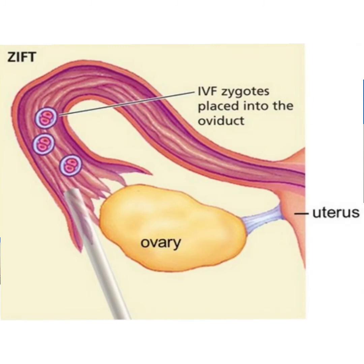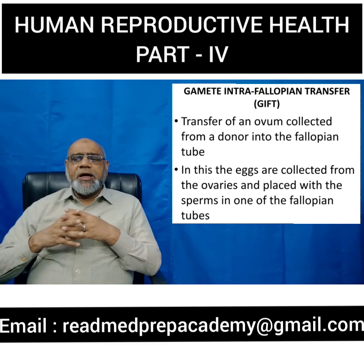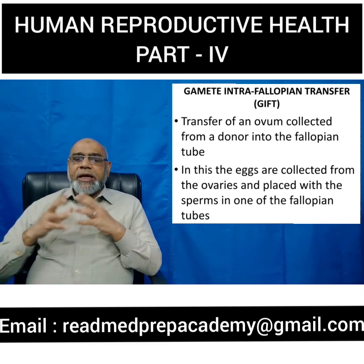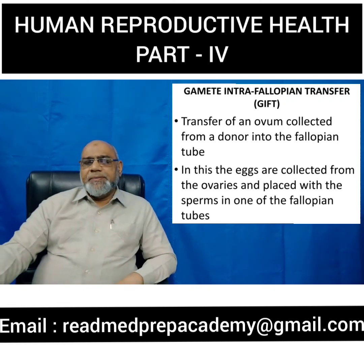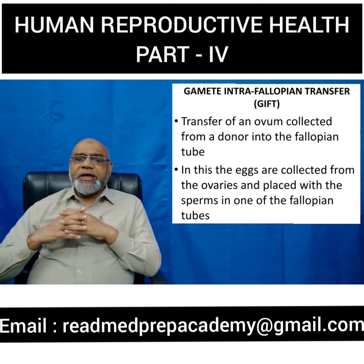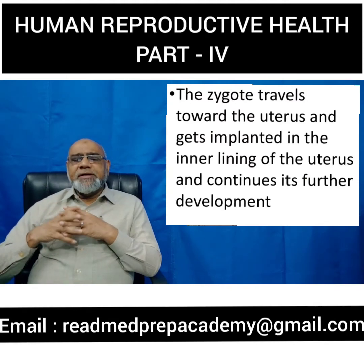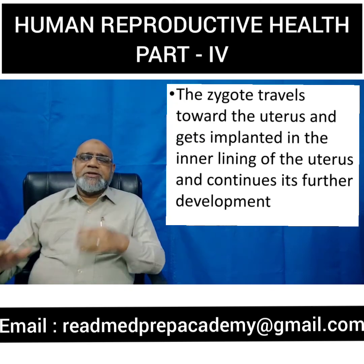What is gamete intrafallopian transfer, or GIFT? In GIFT, the eggs and sperms are placed into the fallopian tube, where fertilization of the ovum and sperm occurs, resulting in the formation of the zygote. The ovum is inserted into the fallopian tube along with the sperms. The zygote formed in the fallopian tube then travels towards the uterus and gets implanted into the inner lining of the uterus, where it continues further development.